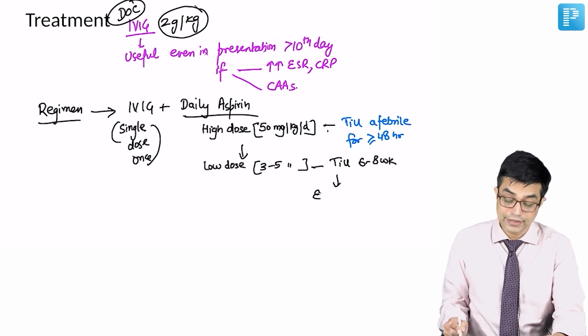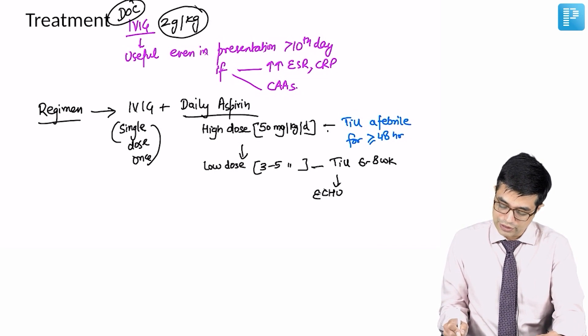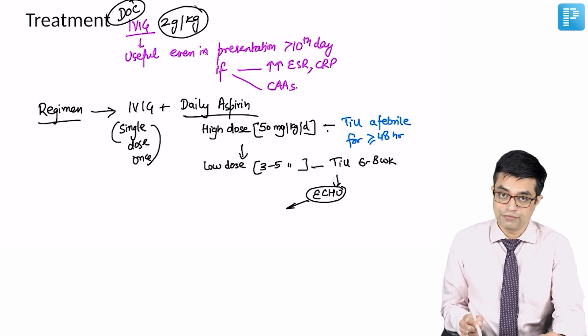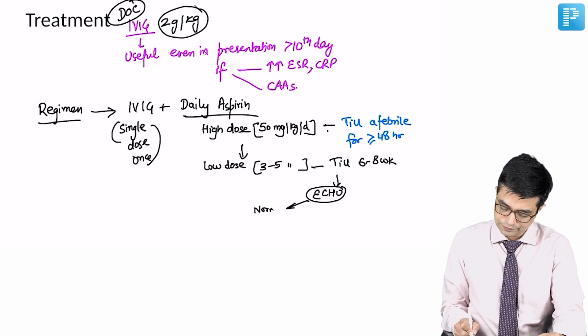At 6 to 8 weeks, as I said before, you will perform an echocardiography. If echocardiography is normal, you will consider stopping aspirin.